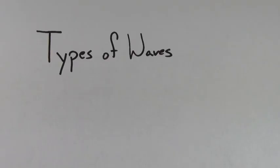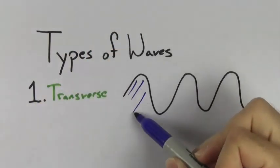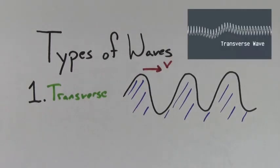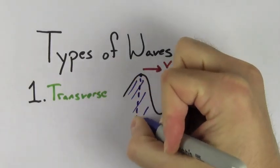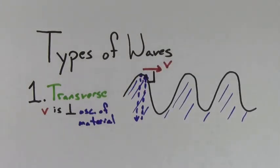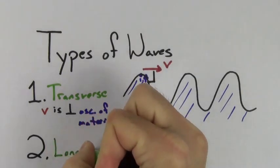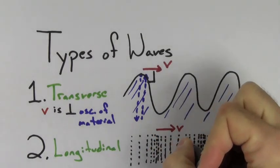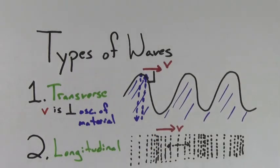There are two types of waves. The first is the transverse wave, in which the velocity of the wave — the direction the crests seem to be moving — is perpendicular to the direction in which the medium is actually oscillating. The other type is a longitudinal wave, in which the direction of the velocity is parallel to the direction in which the medium is oscillating.